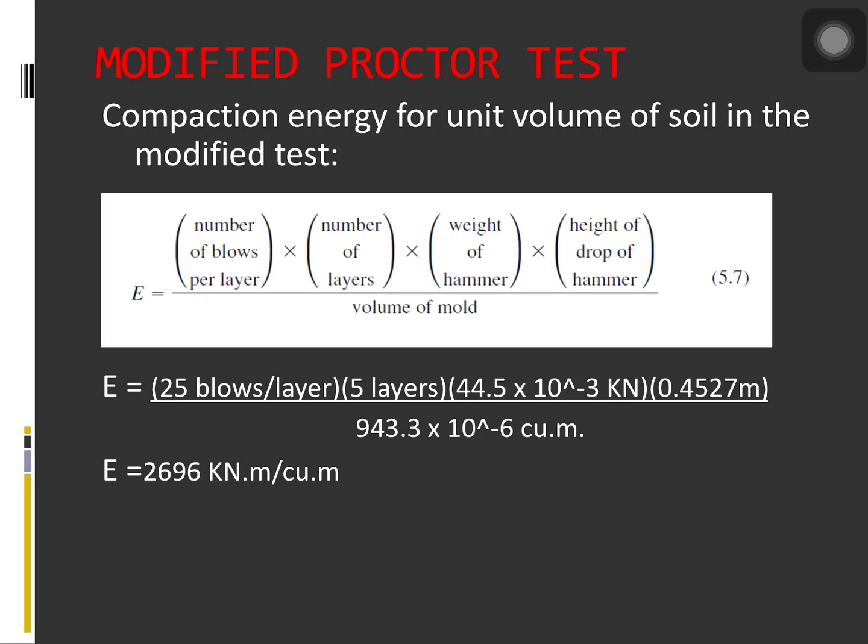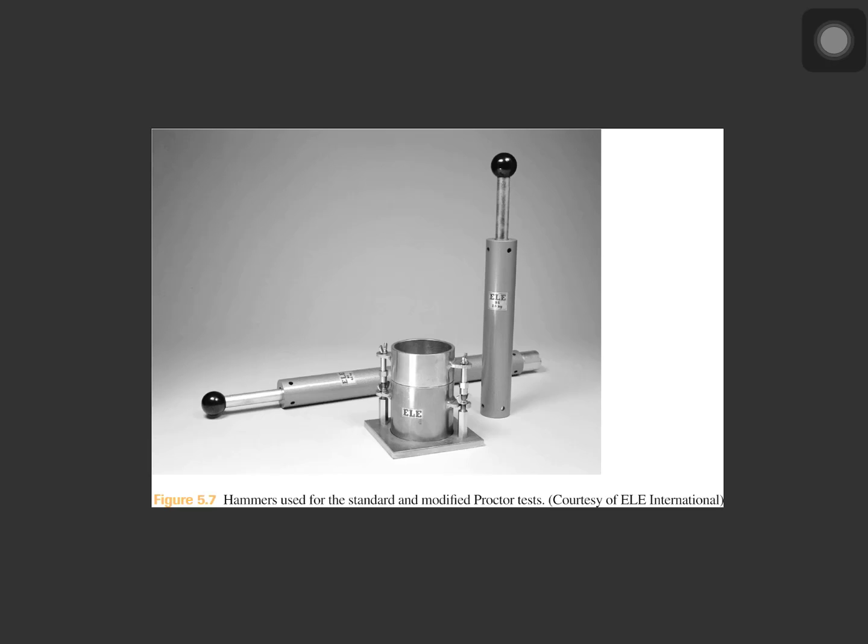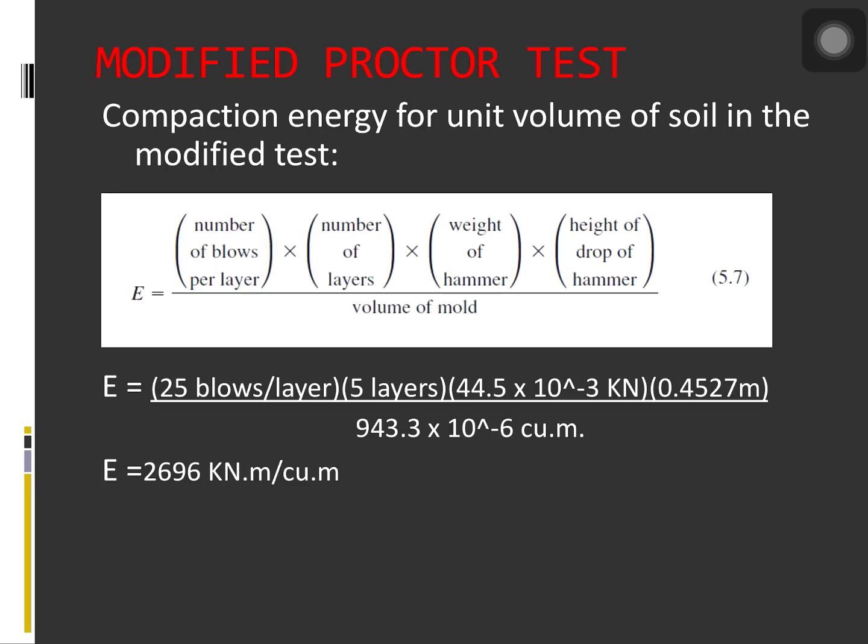We have what we call a modified proctor test. A while ago, we discussed the standard proctor test. Now we will discuss the modified proctor test. What is the difference? With the development of heavy rollers and their use in the field compaction, standard proctor test was modified to better represent field conditions, which is referred to as the modified proctor test or ASTM test designation D-1557 and AASHTO test designation T-180. For conducting the modified proctor test, the same mold is used with a volume of 943.3 cubic centimeter, as in the case of the standard proctor test. However, the soil is compacted in five layers.